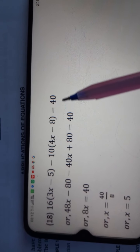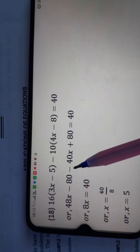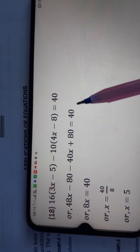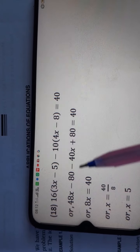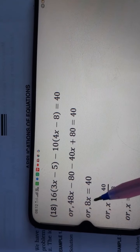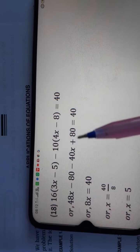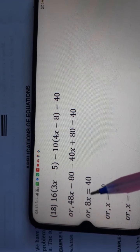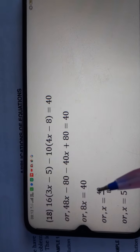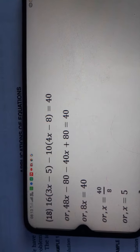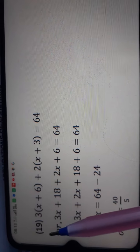Question number 18: 16(3x minus 5) minus 10(4x minus 8) is equal to 40. Opening brackets: 48x minus 80 minus 40x plus 80 is equal to 40. Collecting like terms: 48 minus 40 gives 8x, and minus 80 plus 80 cancel to 0. So 8x is equal to 40, and dividing 40 by 8 gives x is equal to 5.